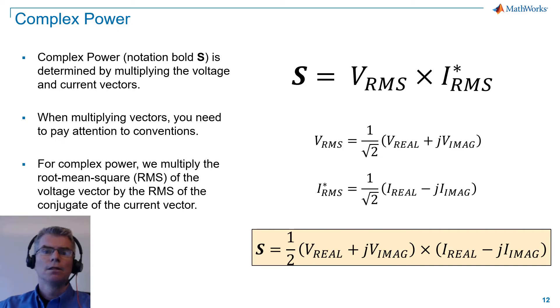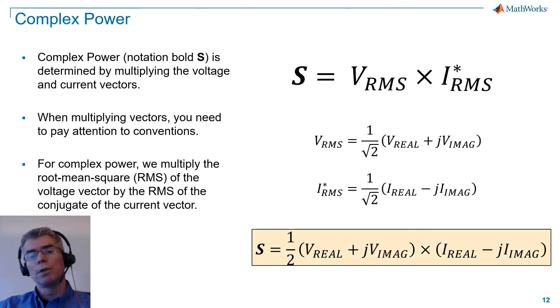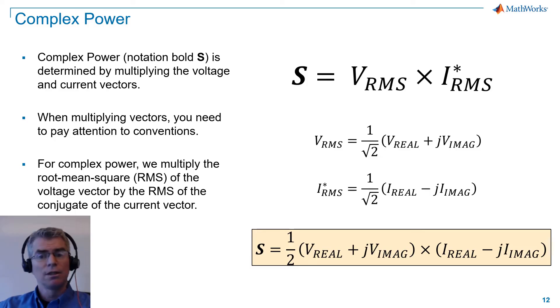Note that complex power has a 0.5 multiplying factor due to the RMS values. You'll also see complex power equations written in trigonometric form in the literature.